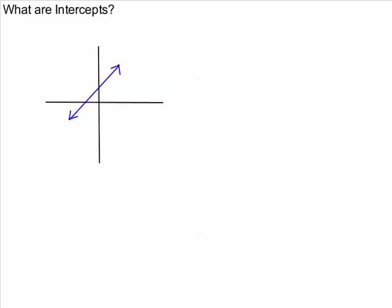For example, this line has one y-intercept right here, so this ordered pair would be the y-intercept, and it has one x-intercept right here that would also be an ordered pair.